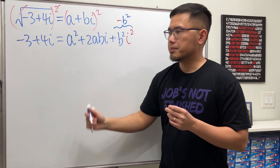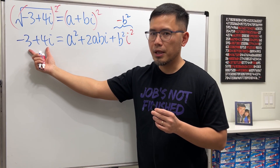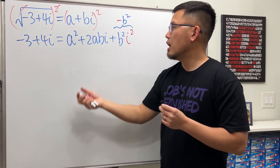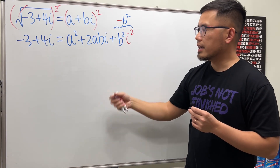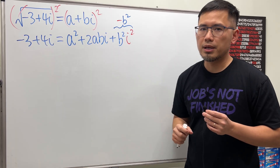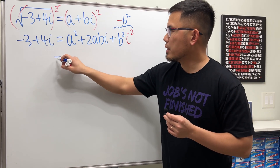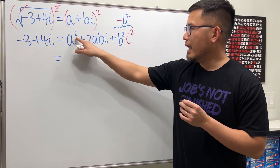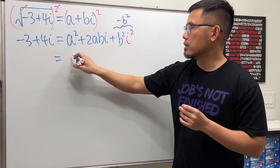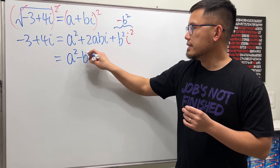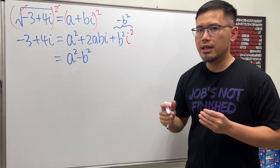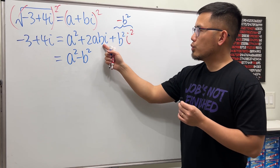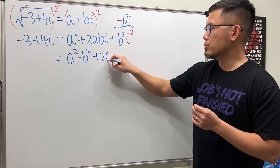On the left-hand side, negative 3 is the real part and 4 is the coefficient of i. On the right-hand side, the real part is a squared minus b squared, and the imaginary part gives us plus 2abi.